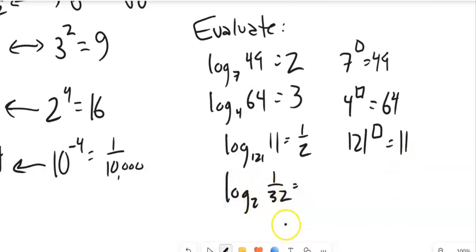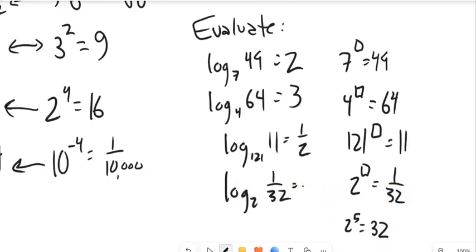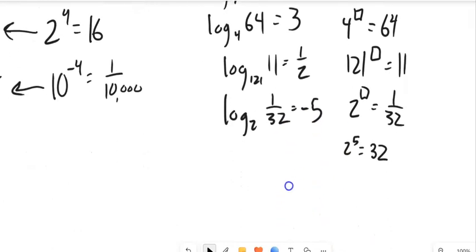And then this last one, 2 to what power is 1 over 32. Well, I know that 2, 4, 8, 16, 32. 2 to the fifth power is 32. So if I multiply by 2 five times, I get 32. So this is 1 over 32. So I must have been dividing by 2 a bunch of times. So this must be a negative 5.